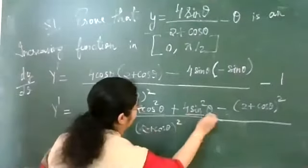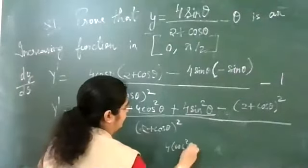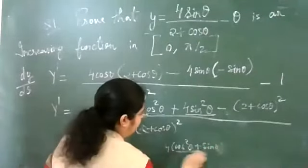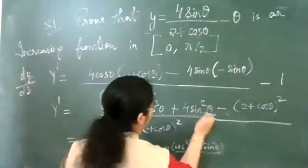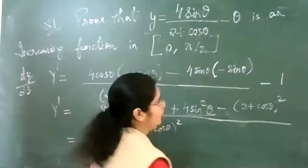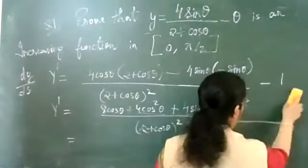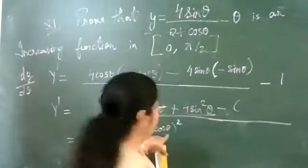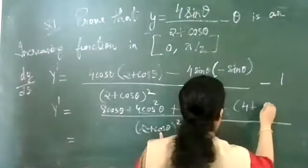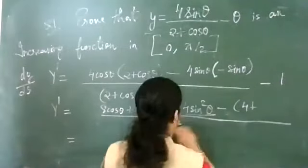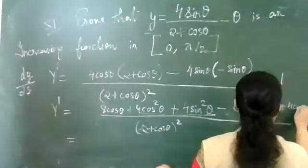This becomes 4cos²θ + 4sin²θ — we can take 4 common, giving 4(cos²θ + sin²θ) = 4 × 1 = 4. And here we can expand (2 + cosθ)² = 4 + cos²θ + 4cosθ. This simplification is clear?